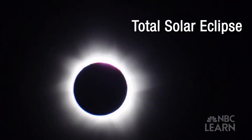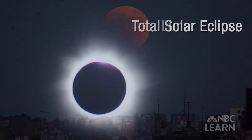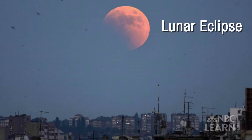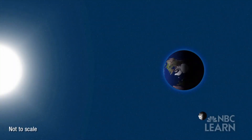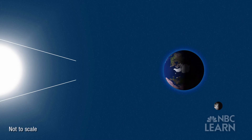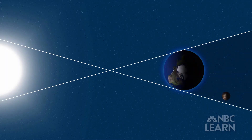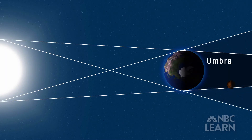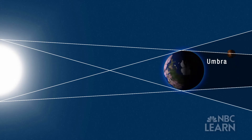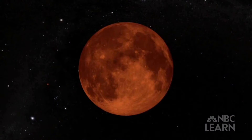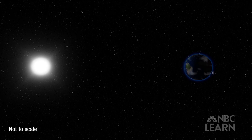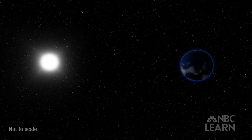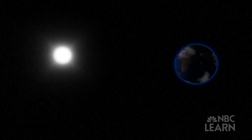A total solar eclipse is just one example of a pattern in space. A lunar eclipse is another example. Lunar eclipses occur when the Moon is on the opposite side of Earth from the Sun. The Moon moves into Earth's shadow — the darkest part is called the umbra — and the Moon slowly appears darker. During a total lunar eclipse, the Moon takes on a reddish color. Eclipses and other patterns in space occur because Earth and the Moon are always moving in relation to the Sun and to one another.